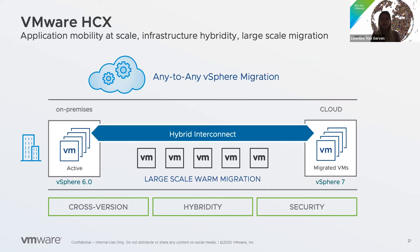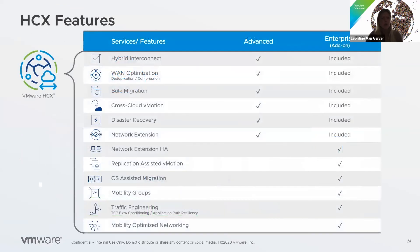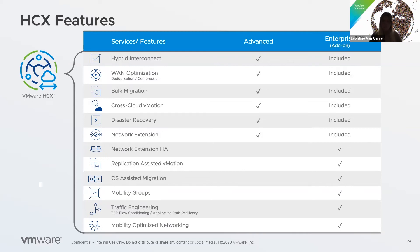HCX can be used to migrate large amounts of virtual machines between two customer data centers on-premise, and it works between any kind of environment. There are different editions of HCX — the enterprise edition provides more features. This product is also included in our VMC on AWS solution, which is a big plus.